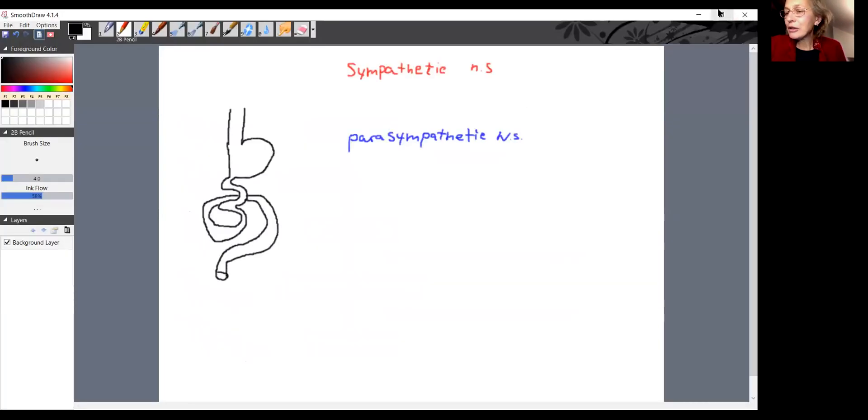Here, I already pre-drew for us a picture of our digestive tract. Here is our mouth with the teeth, esophagus, stomach, small intestine, large intestine, and we go to the bathroom right here.